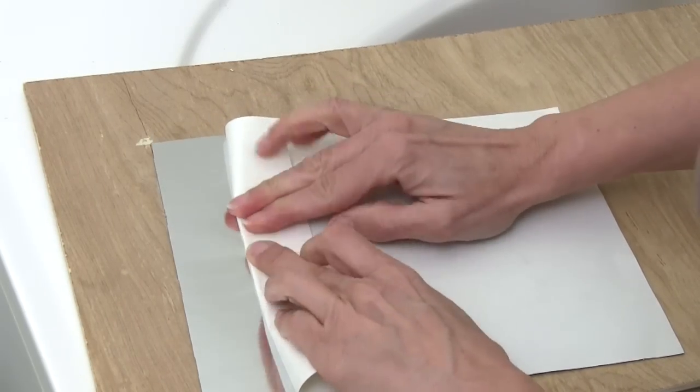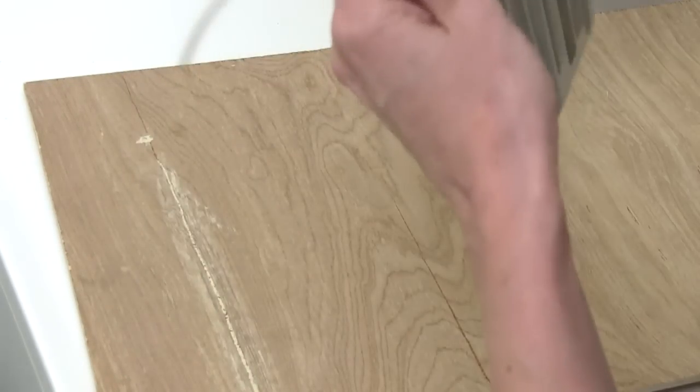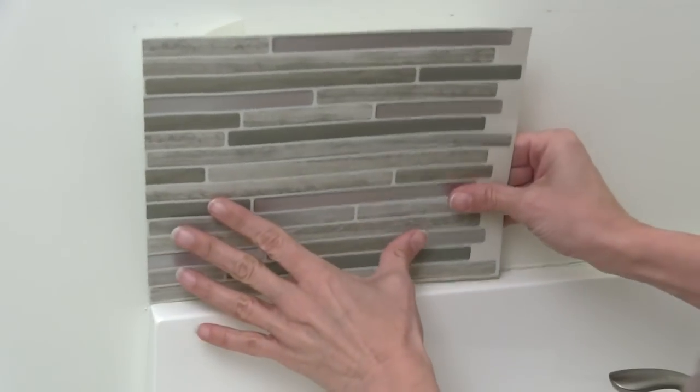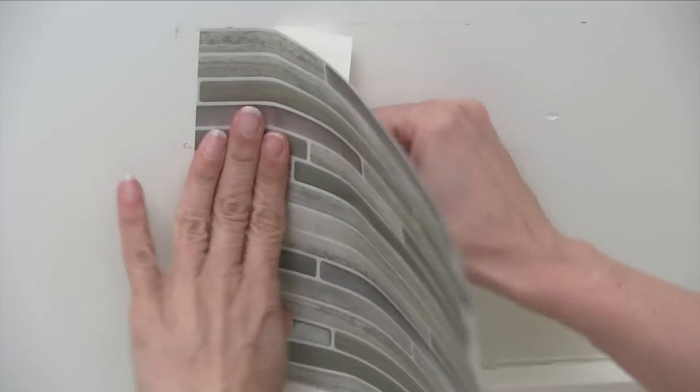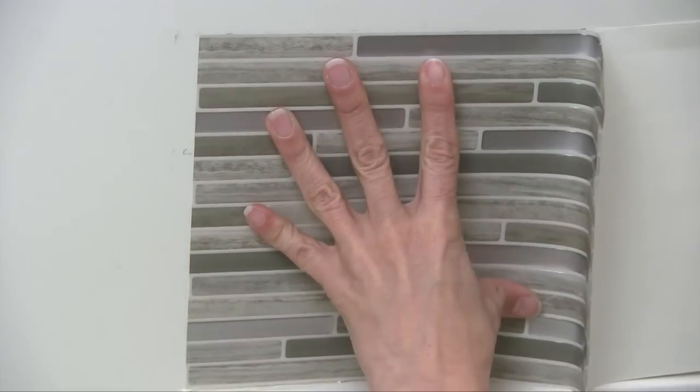To install the tile, I peeled off a couple inches of the backing. And I used the line as a guide to make sure that it's straight. I lightly pressed on the end first. Then I removed the rest of the backing and then pressed on the tile to make sure that it sticks to the wall properly.